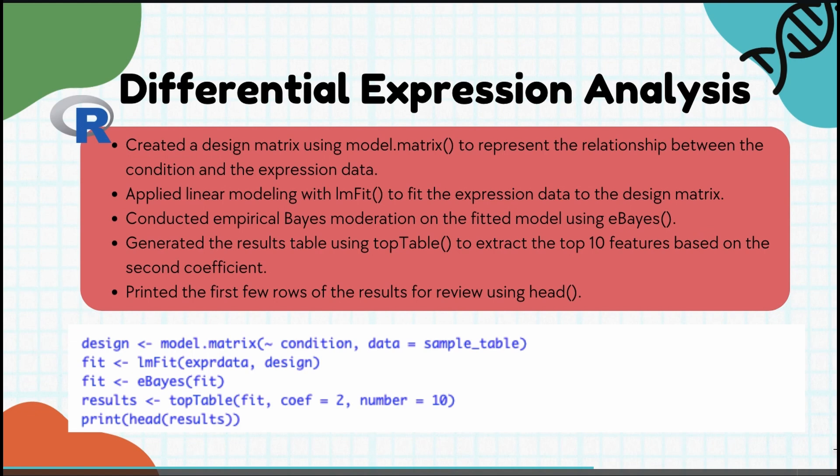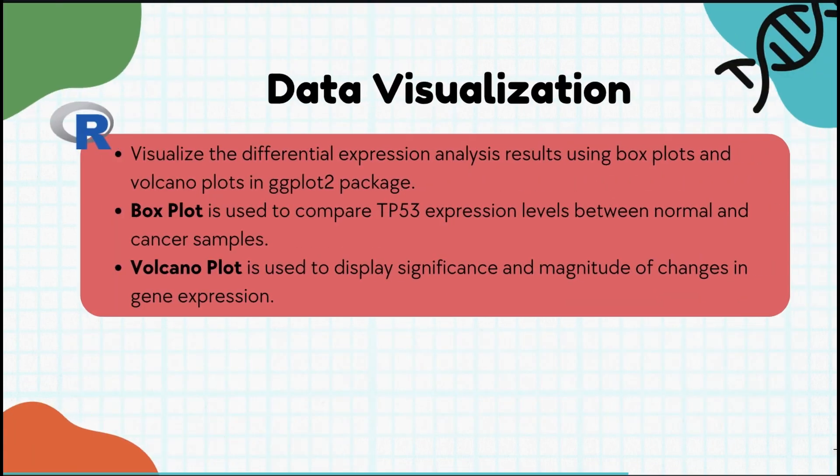Once we pre-process the data, we'll move into differential gene expression analysis using the limma package. Here's what we'll be doing: fitting a linear model to the expression data to assess how TP53 differs between lung cancer tissue and normal tissue, then applying statistical testing to determine whether the observed differences are significant.